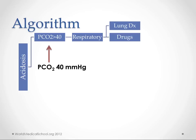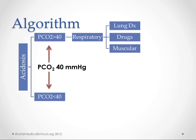Some causes of respiratory acidosis would be lung disease, drugs that might depress our respiratory system, and some kind of muscular problem that might depress respiration. If your CO2 is less than 40, then we know it's a metabolic acidosis, because that means we're not retaining carbon dioxide.